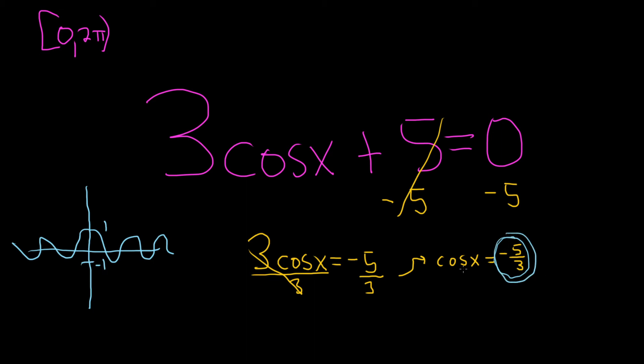So there's no way the cosine function will ever be equal to that, because the smallest it can be, according to the graph, is negative 1. So the answer here is that there is no answer. There is no solution.